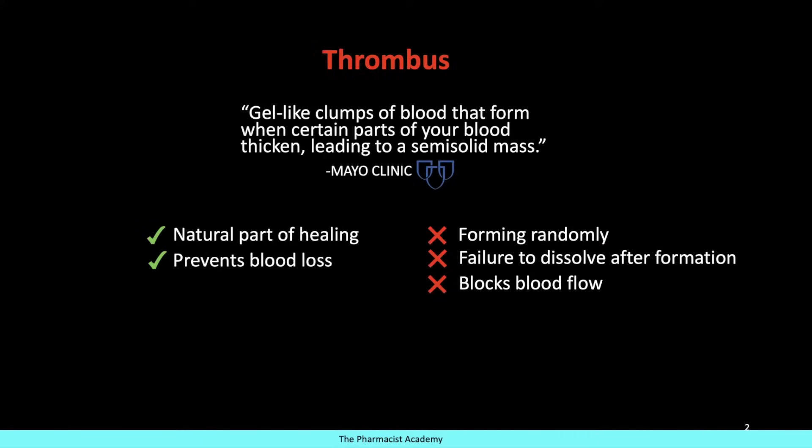Thrombus, also known as a clot, according to Mayo Clinic, is a gel-like clump of blood that forms when certain parts of your blood thicken, leading to a semi-solid mass. Now whenever we think about clots, we always assume the worst — diseases, strokes, heart attacks, and all of that. But please keep in mind that clots are a part of your natural healing process. So let's say you get a cut — clots are formed to prevent blood loss.